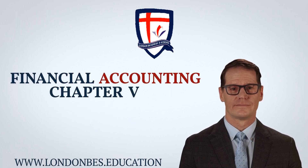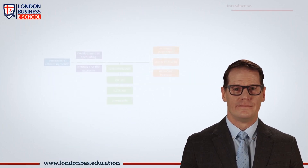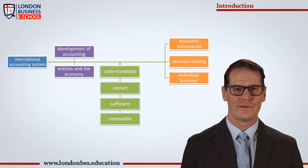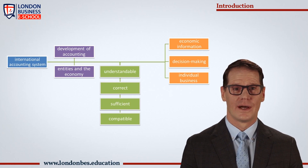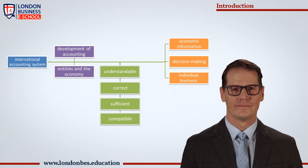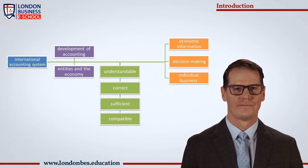Financial accounting, chapter 5 introduction. The creation of an international accounting system was an objective process influenced by global economic development. It was tightly connected to the development of accounting as a science, formalization of accounting theories, and establishment of different schools of accounting, as well as the evolution of the entire economic profession.